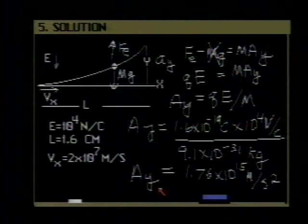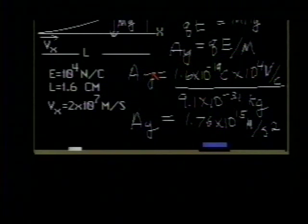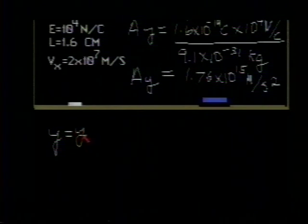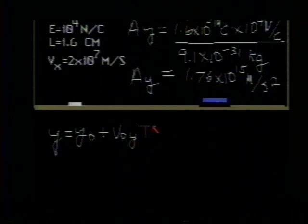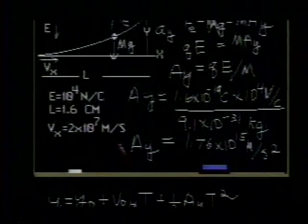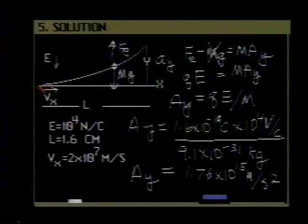The displacement y, we can write from one of our familiar kinematic equations, that the displacement y is equal to y zero plus v zero y times the time, plus one half the acceleration in the y direction multiplied by the time squared. Some of these terms are zero. Y zero in this problem is zero. Our origin in the y direction coincides with it. And v zero y, there is no original velocity in the y direction. That too is equal to zero.